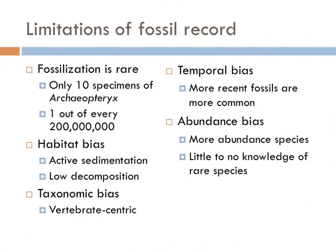Fossilization is extremely rare — it's thought to only happen once for every 200 million organisms. There are only 10 specimens of the bird-like dinosaur Archaeopteryx, and all of our direct evidence that birds came from dinosaurs is based on these 10 specimens. There's also a habitat bias: as fossilization requires sedimentation, areas with high sedimentation such as marine and lake environments have much higher numbers of fossils than highly eroded environments like deserts. Fossilization also requires little to no decomposition, so tropical rainforests have literally no fossils, because when something dies it decomposes very quickly — even a huge tree can be completely decomposed within a single year.